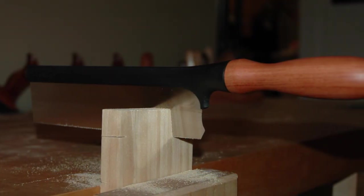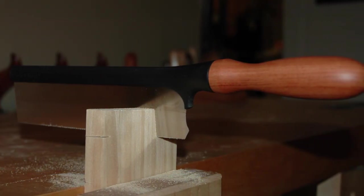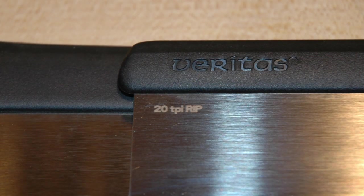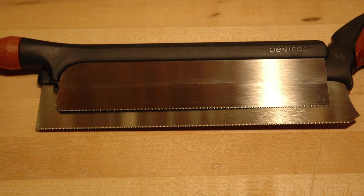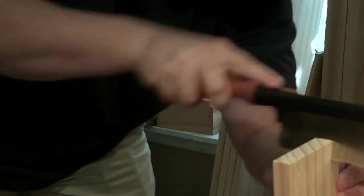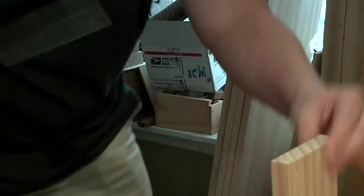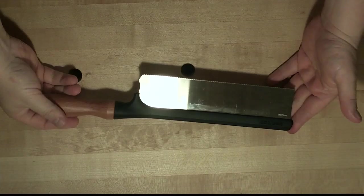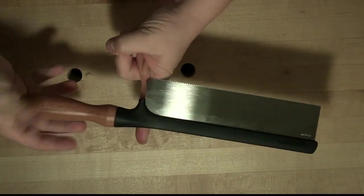Now the first thing you'll notice about these gent saws is how light they are. I'm assuming this is attributed to the back being smaller in height, width, and length, plus that there's less meat in the handle. Still, it's surprising. Weight in a saw like this does affect cutting. The lighter it is, the more your wrist has to apply the pressure.